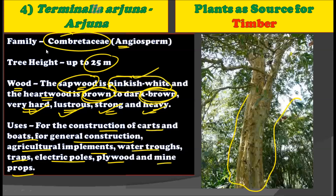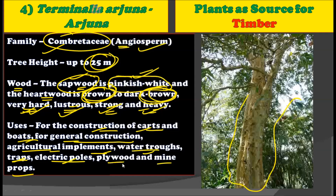Terminalia arjuna is the fourth plant for timber production, belonging to the angiosperm family Combretaceae, growing up to 25 meters. Its sapwood is pinkish white and hardwood is brown to dark brown. It is very hard, lustrous, strong, and heavy, used for construction of carts and boats, general construction, agricultural implements, water troughs, traps, electric poles, plywood, and mine props.